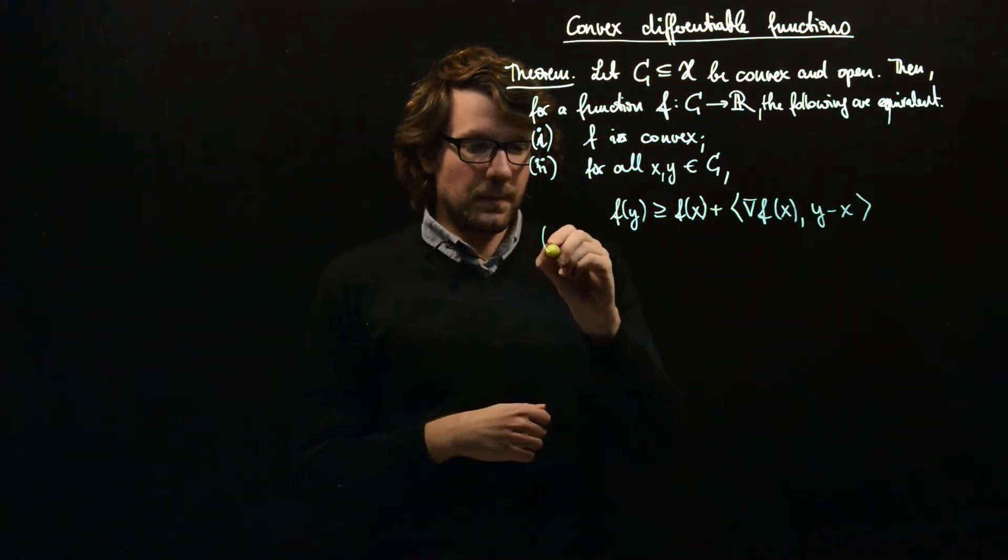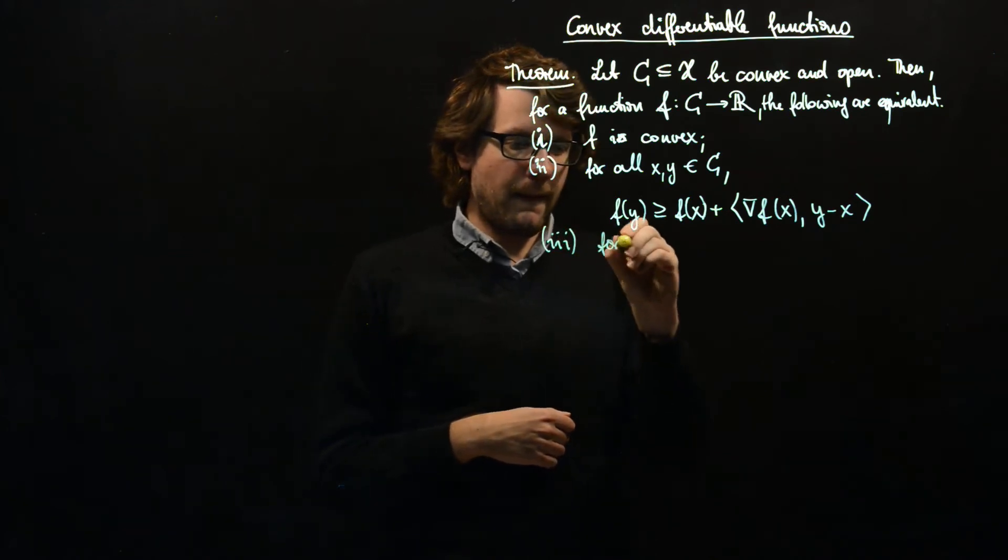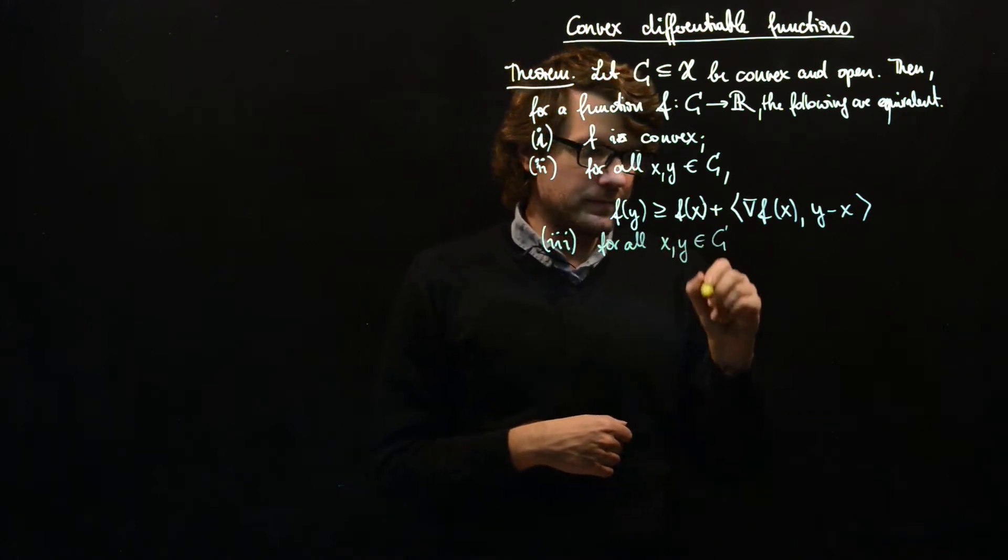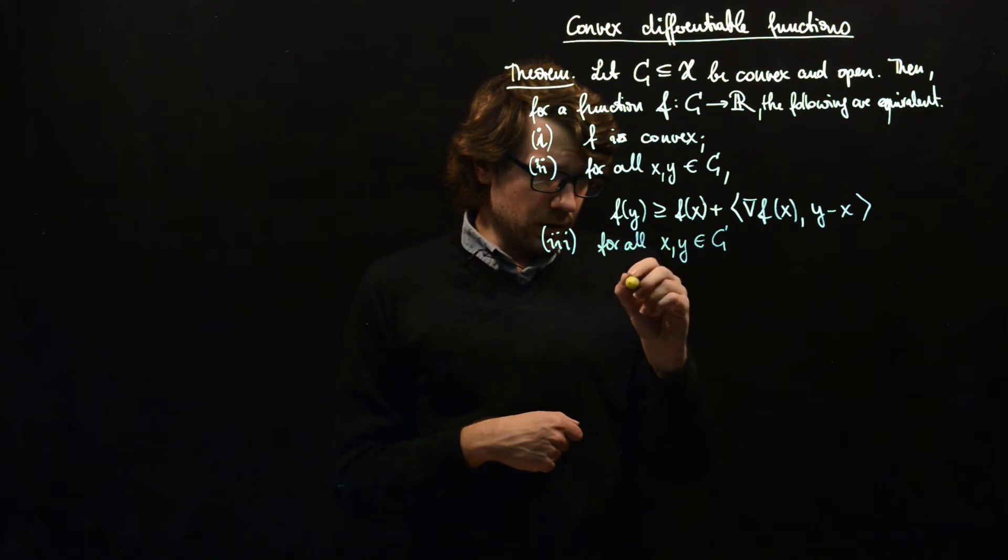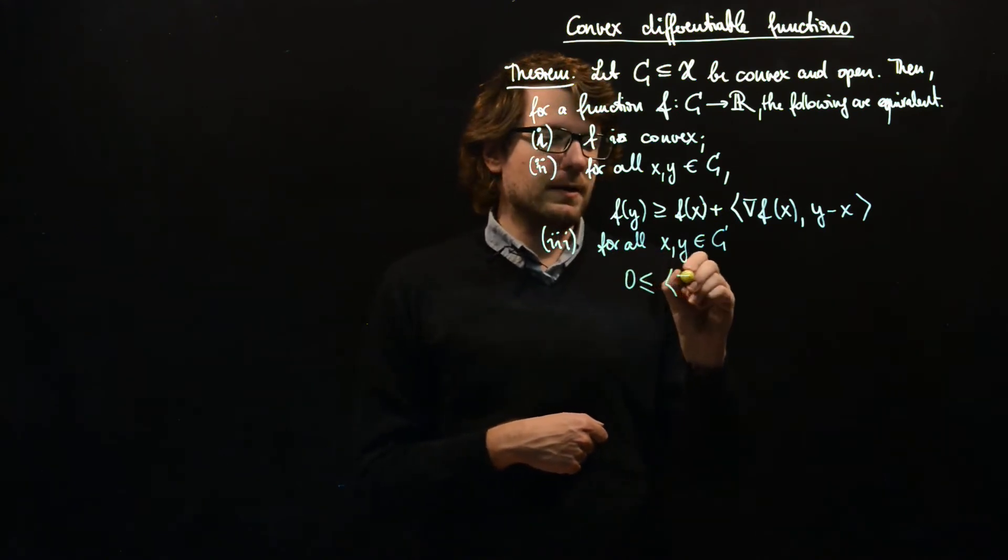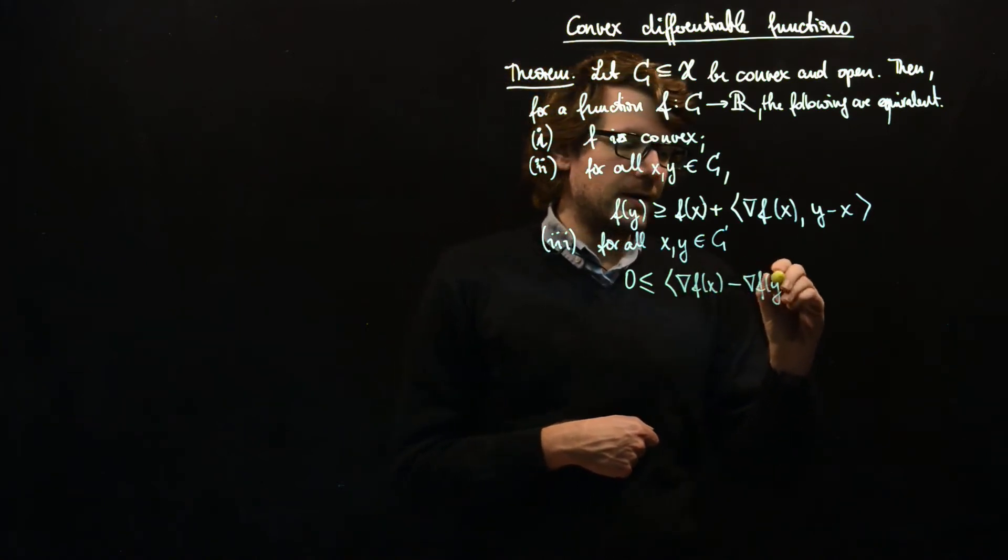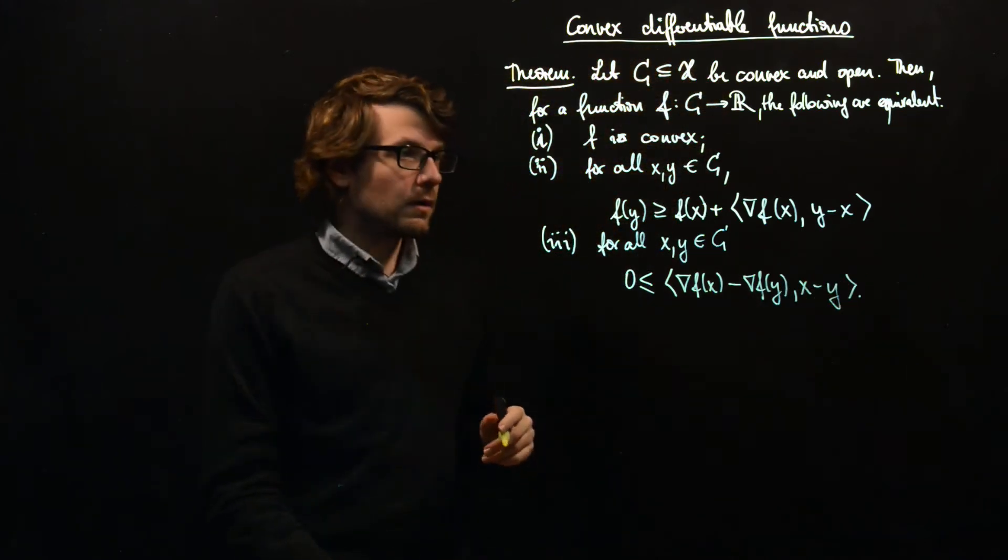Third point: for all X and Y in C, 0 ≤ ⟨∇F(X) - ∇F(Y), X - Y⟩.